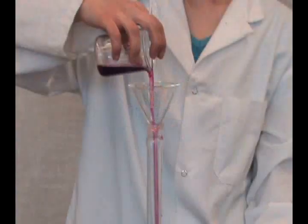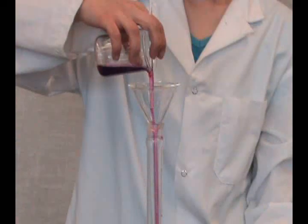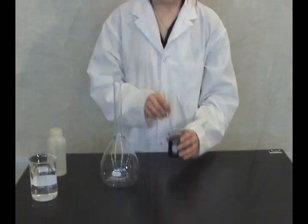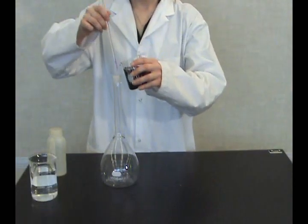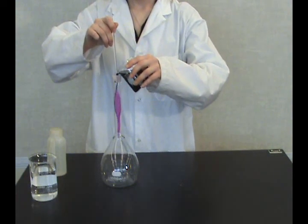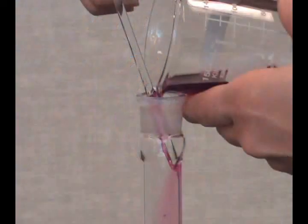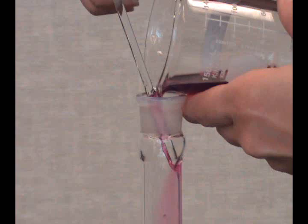Use a funnel to pour the solution into a 1000 milliliter volumetric flask, or if capable, just the glass rod holding it against the spout of the beaker. Make sure the tip of the rod touches the inside of the flask neck to control the flow.